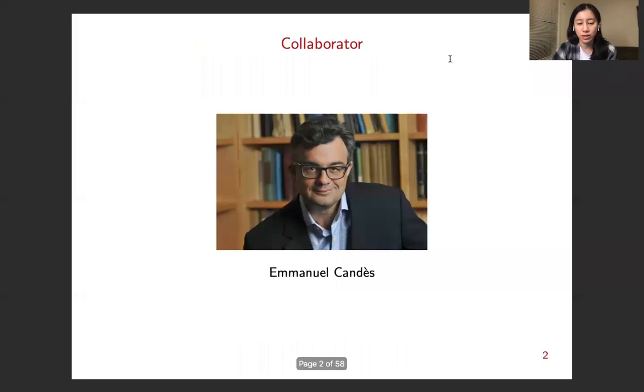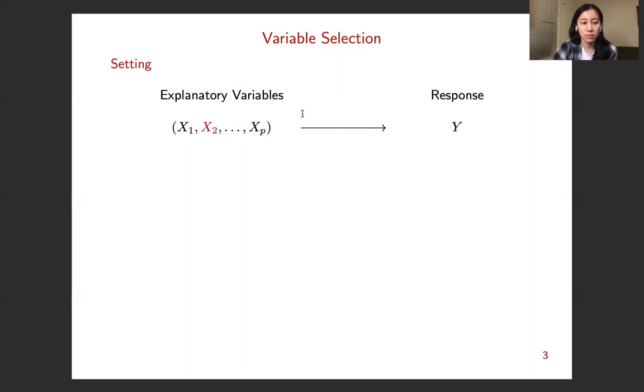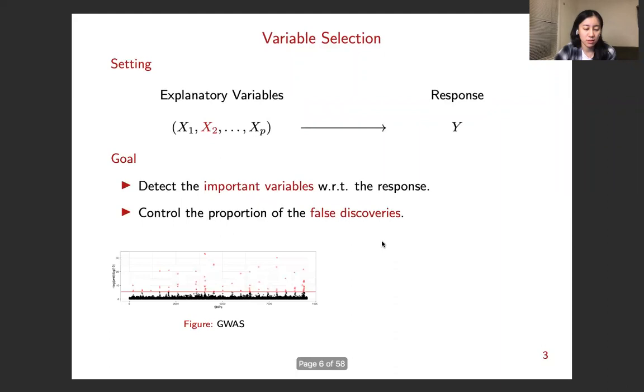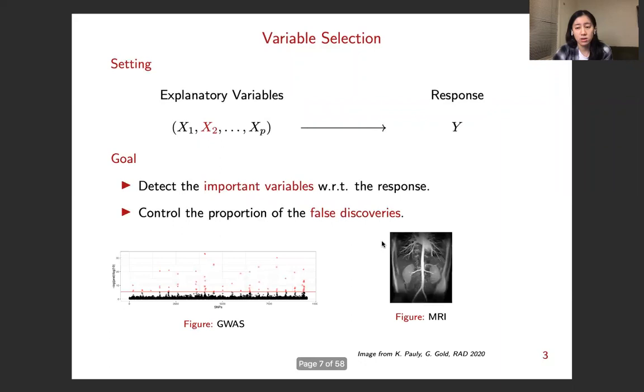The general problem that we consider is the variable selection problem. Suppose we're given potentially many explanatory variables and the response Y. Our goal is to detect the important variables with regard to the response, meanwhile controlling the proportion of false discoveries. Examples of such variable selection problems include GWAS and MRI. For example, in GWAS, the scientist wants to discover genetic variants that are associated with certain phenotypes.